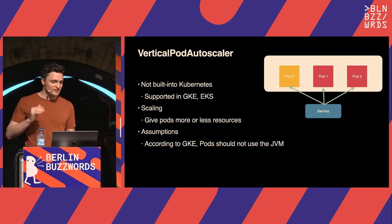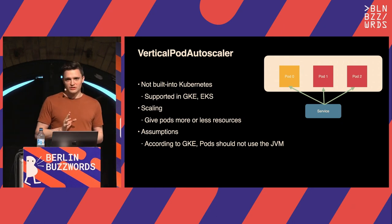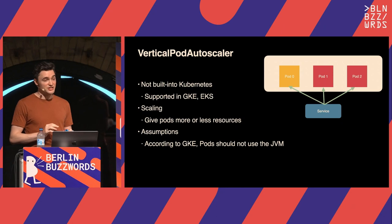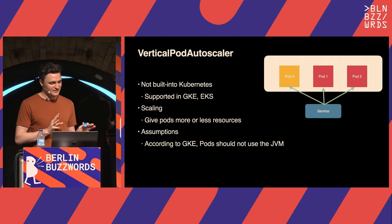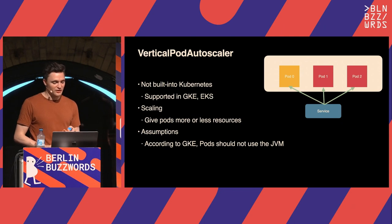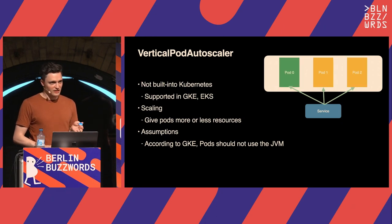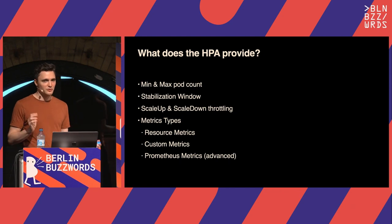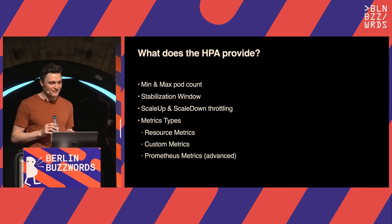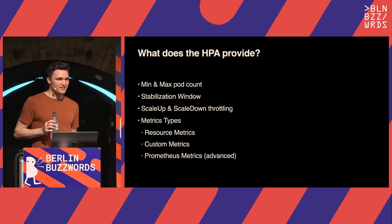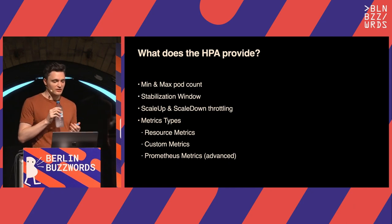The Vertical Pod Autoscaler — if you look at the Google Kubernetes Engine documentation, it says pods using the VPA should not use the JVM. So since Solr is a Java application, it's a moot point. We're not going to get into it very much. As you can see, if you have over-utilized pods it makes your pods bigger, and eventually they level off.